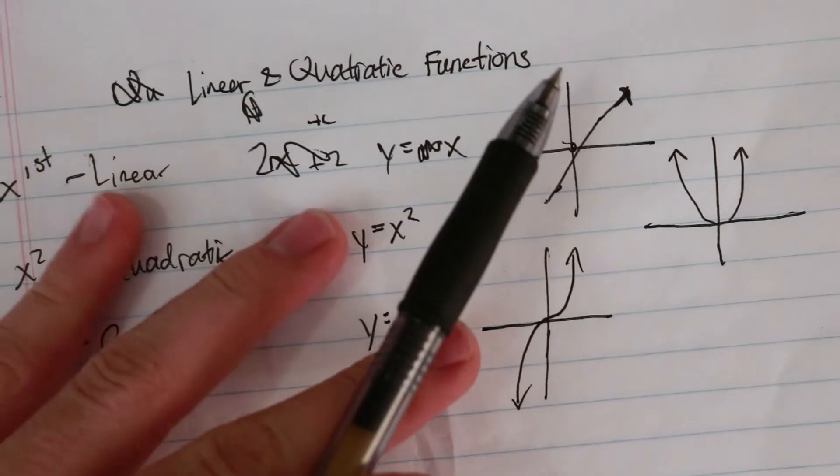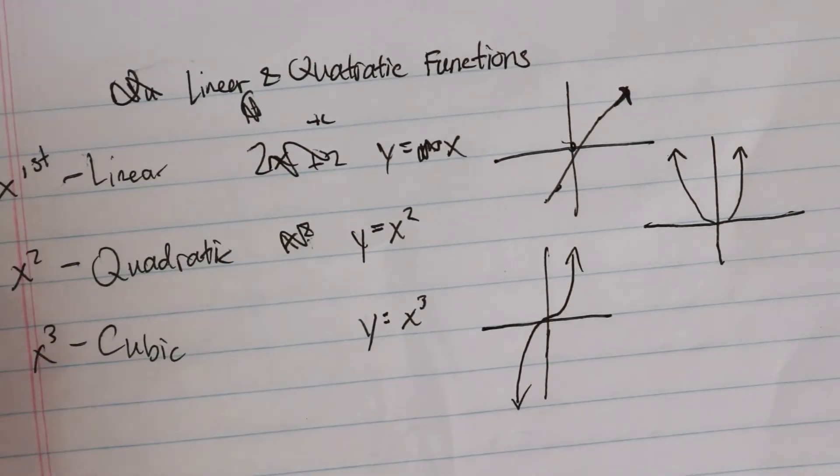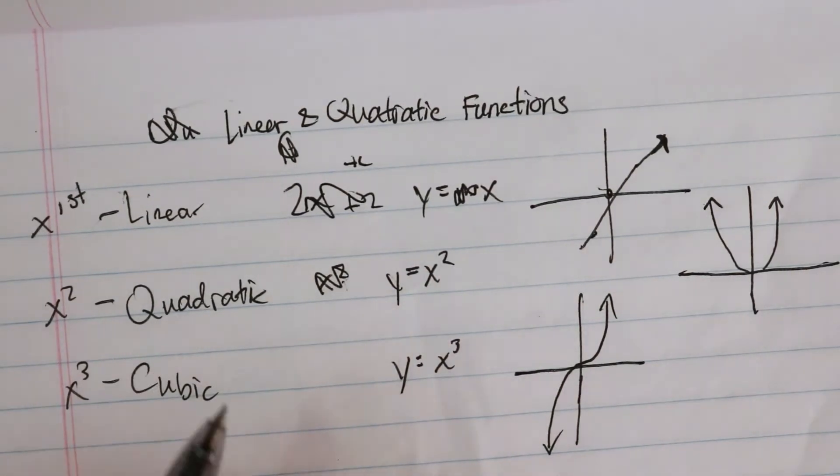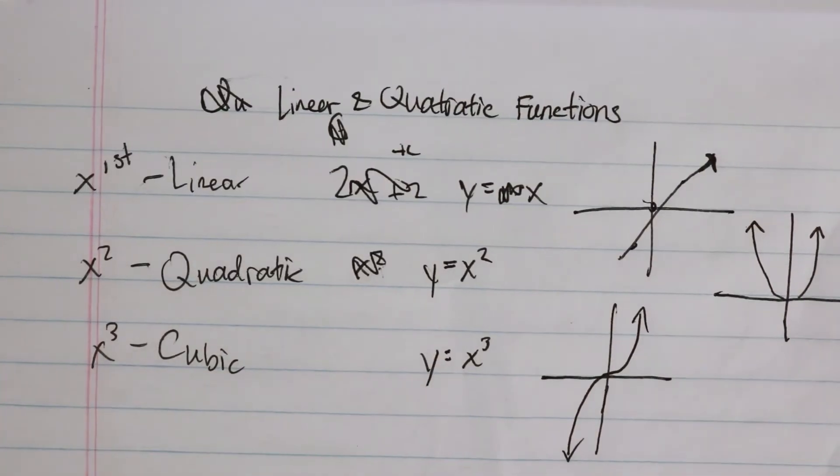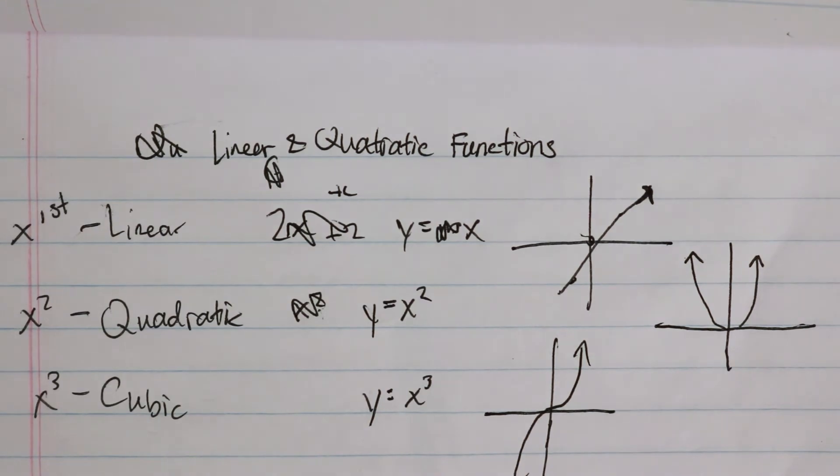We've already learned tools to deal with linear functions, like slope-intercept form and point-slope form. For quadratic functions, we're going to look at factoring and the quadratic formula. And then for cubic functions, things like that. So that's some linear, quadratic, and cubic function stuff.